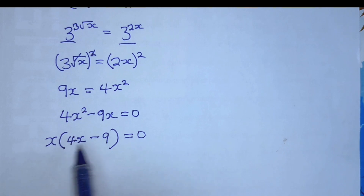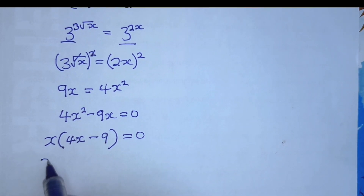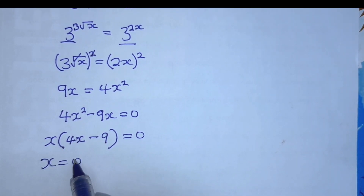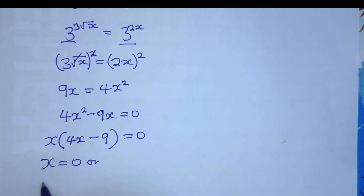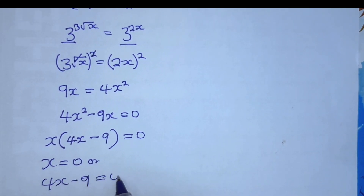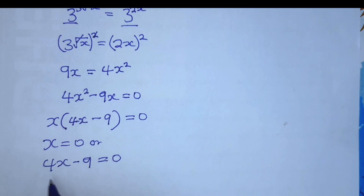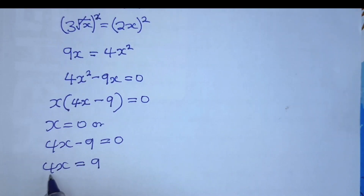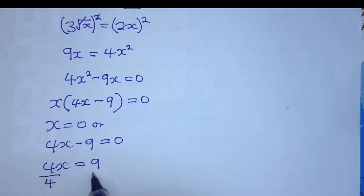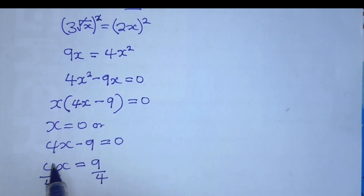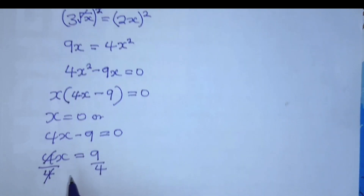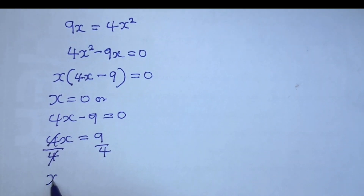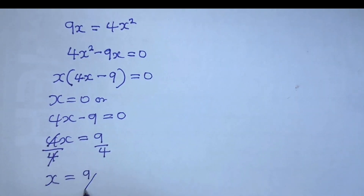From this step we have two solutions. We have x is equal to 0, or we have 4x minus 9 equals 0, which gives 4x equals 9. Dividing both sides by 4, the 4s cancel and we are left with x equals 9 divided by 4.